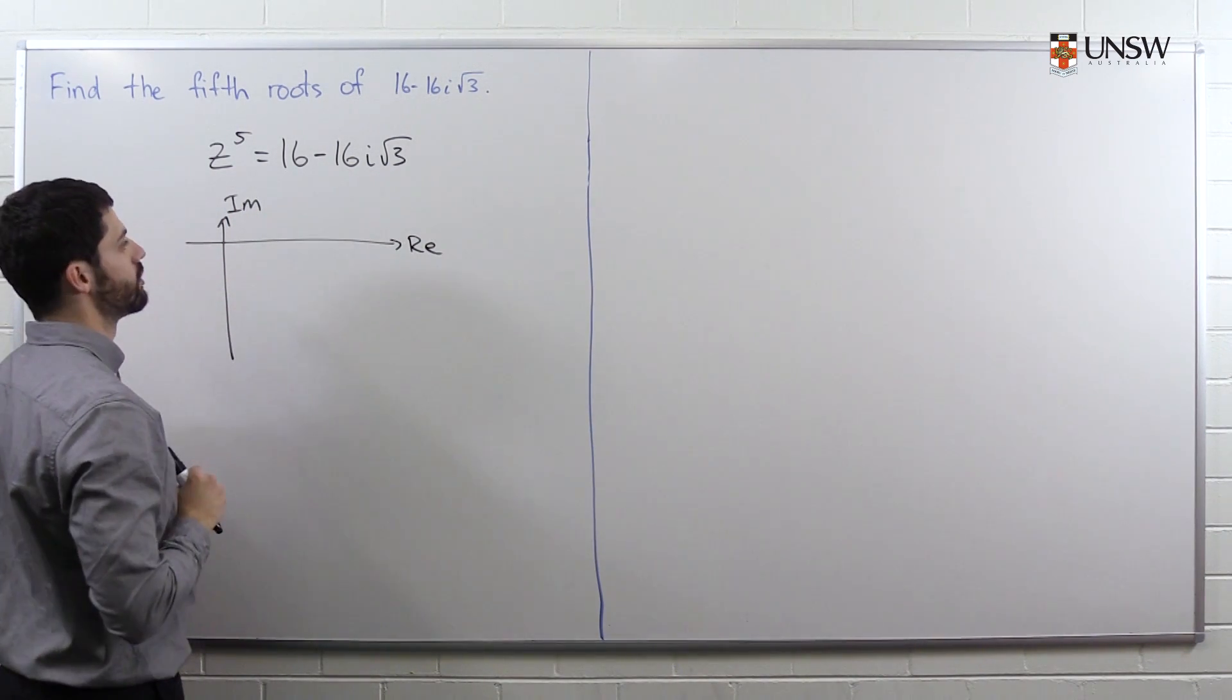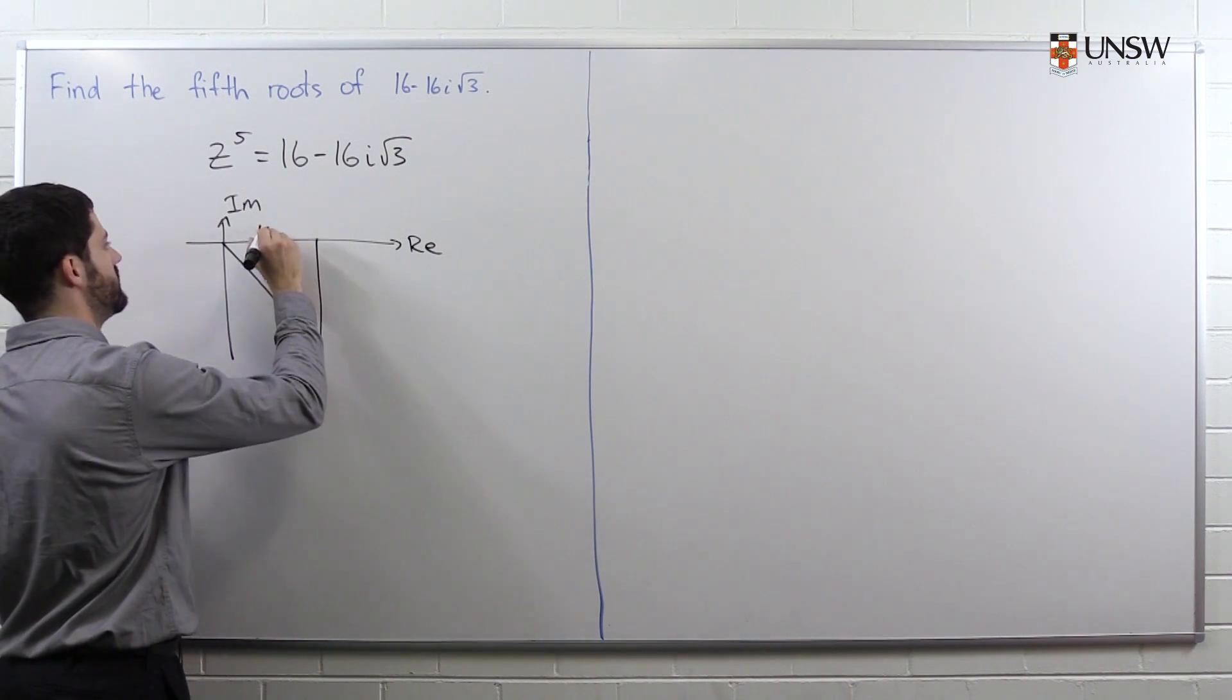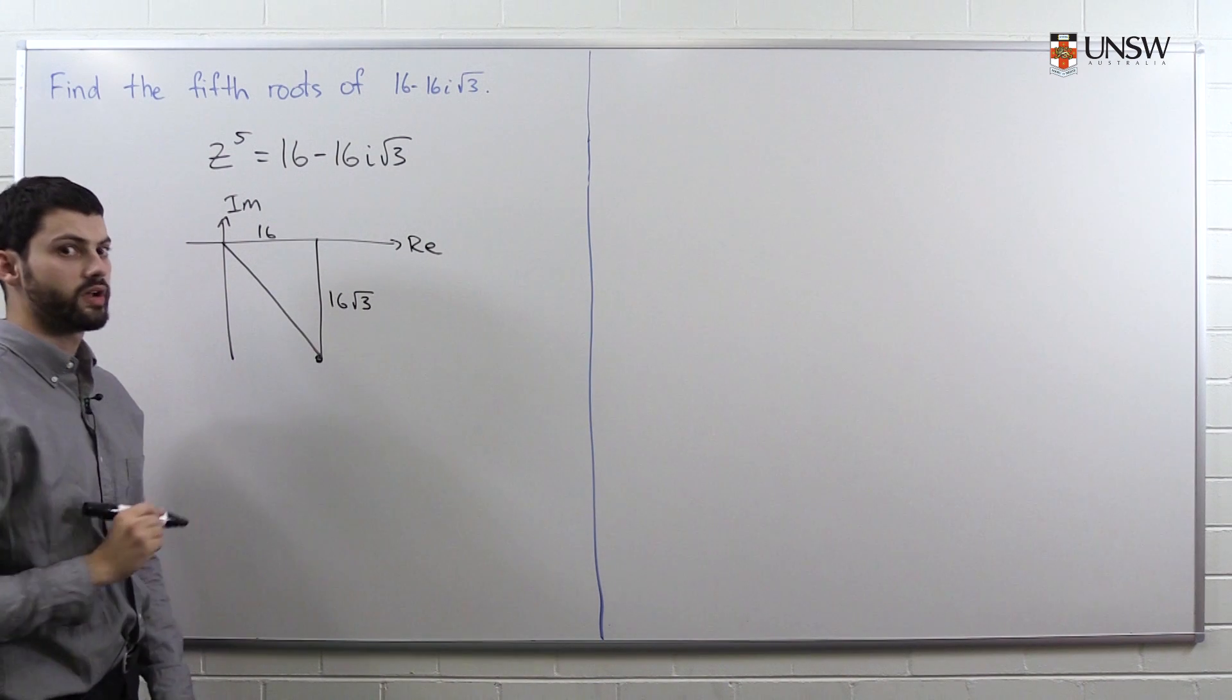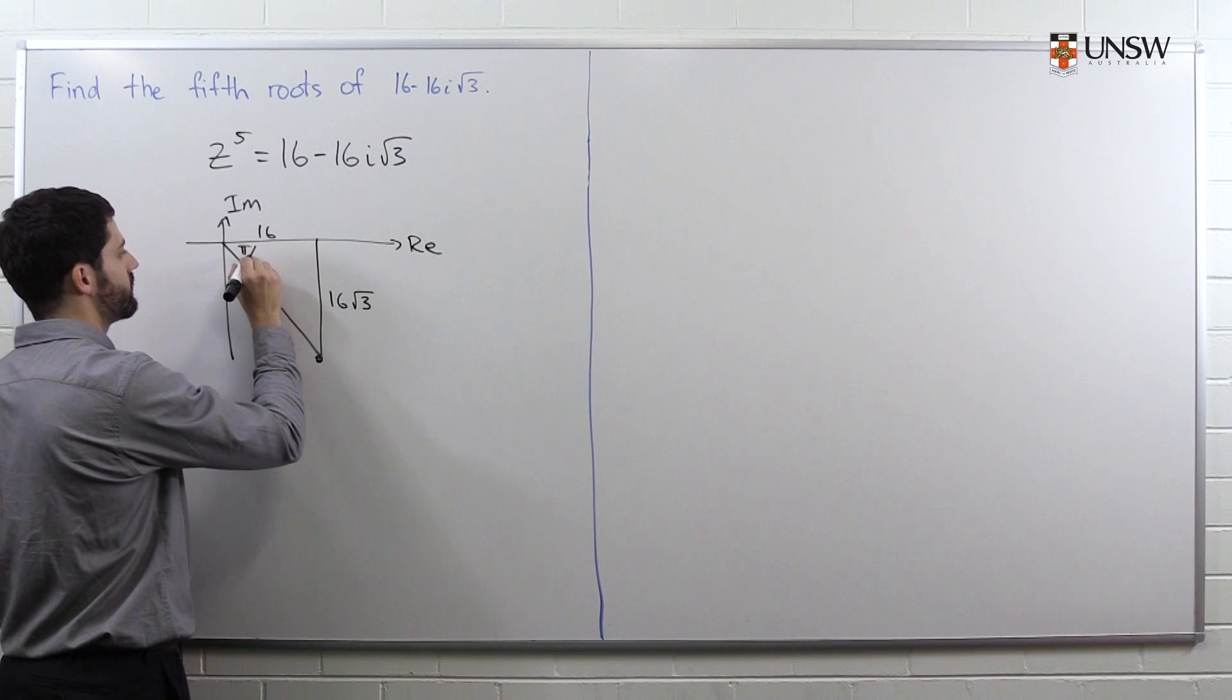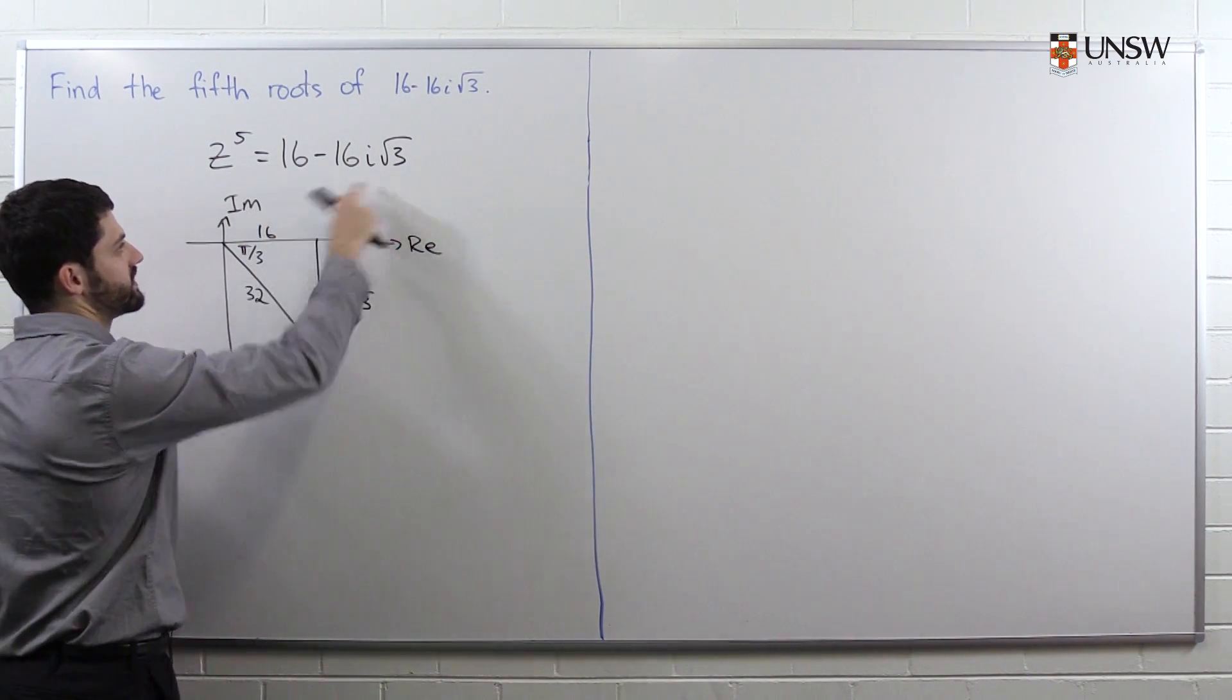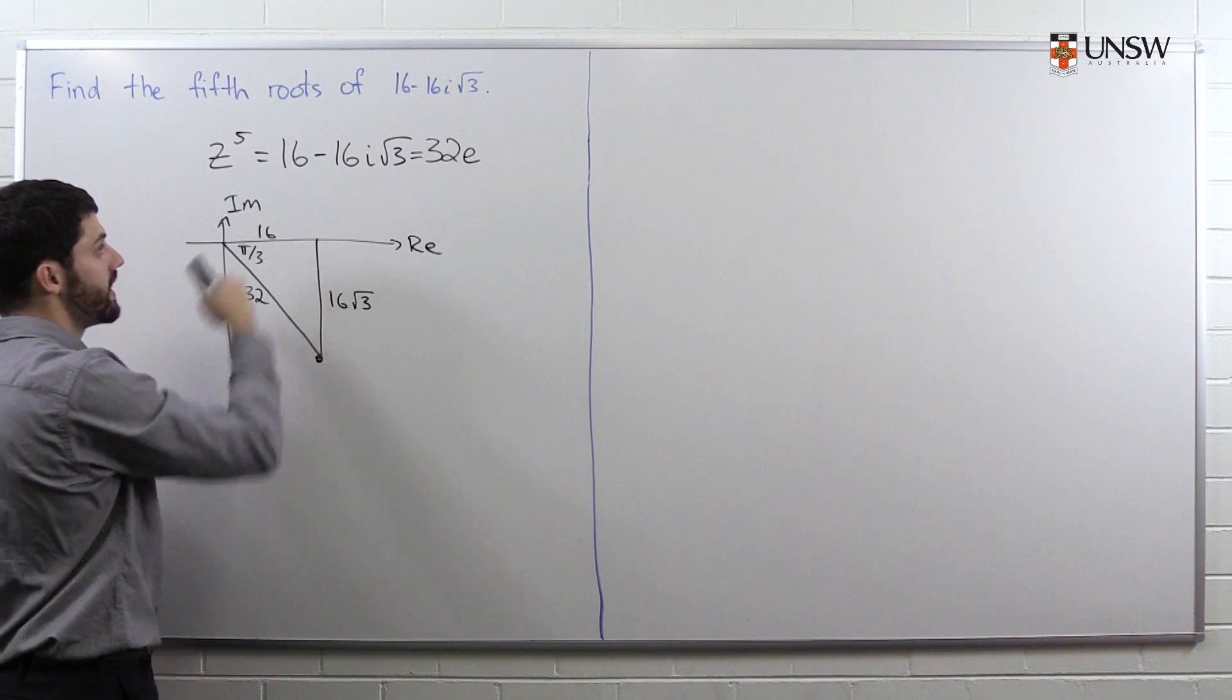So where does this complex number sit? Well, it sits somewhere over here, where the real part is 16, and the imaginary part is minus 16√3, so it's below the real axis. If we use some trigonometry, we'll see that this angle there is π/3, and this distance there is 32. So that means we can now write this complex number in polar form: its modulus is 32, and its argument is minus π/3.